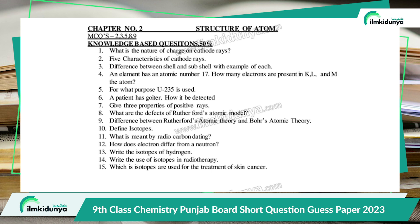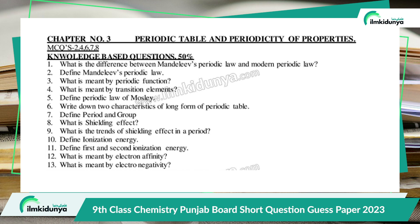Chapter 3 is Periodic Table and Periodicity of Properties. The important short questions are: What is the difference between Mendeleev's periodic law and the modern periodic law? Define Mendeleev's periodic law. What is meant by periodic function? What is meant by transition element? Define the periodic law of Moseley. Write down two characteristics of the long form of the periodic table. Define period and group. What is shielding effect and what is the trend of shielding effect in a period? Define ionization energy, first and second ionization energy. What is meant by electron affinity and electronegativity?